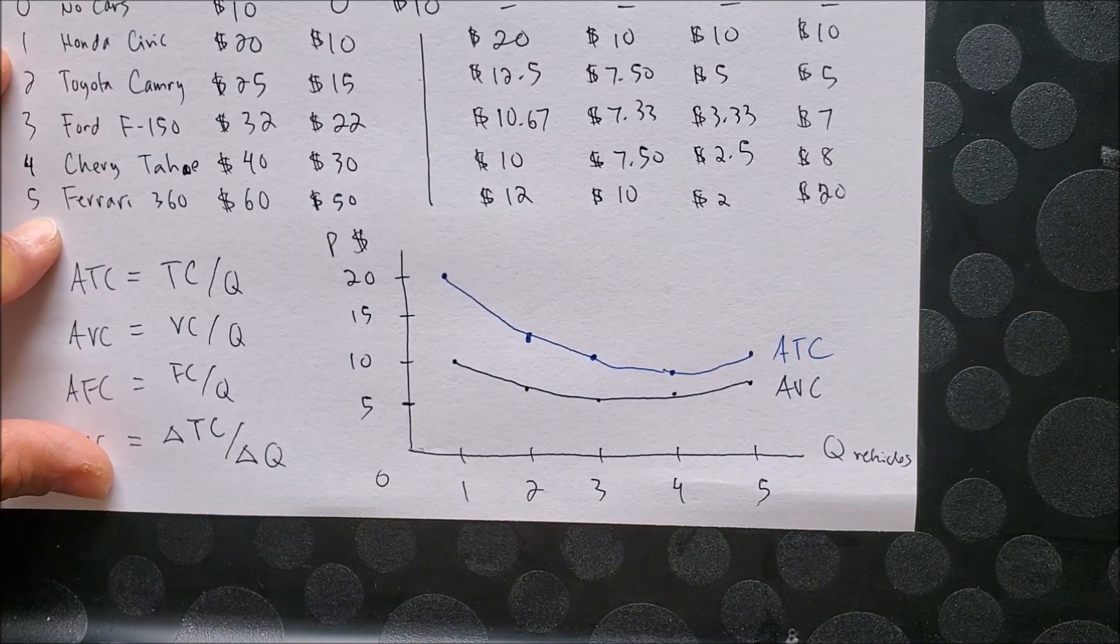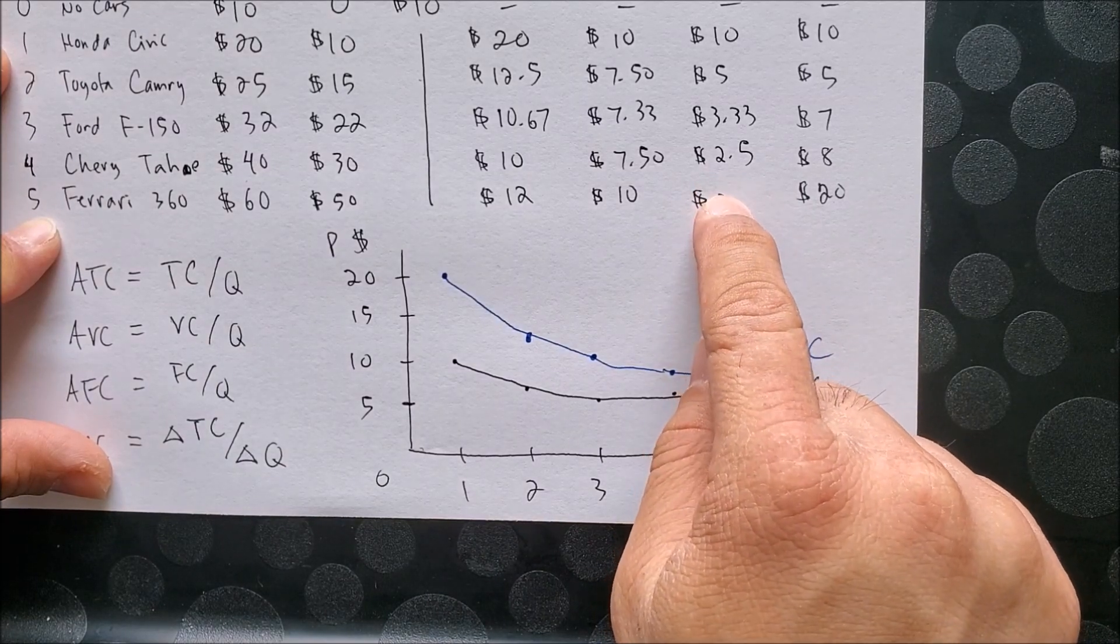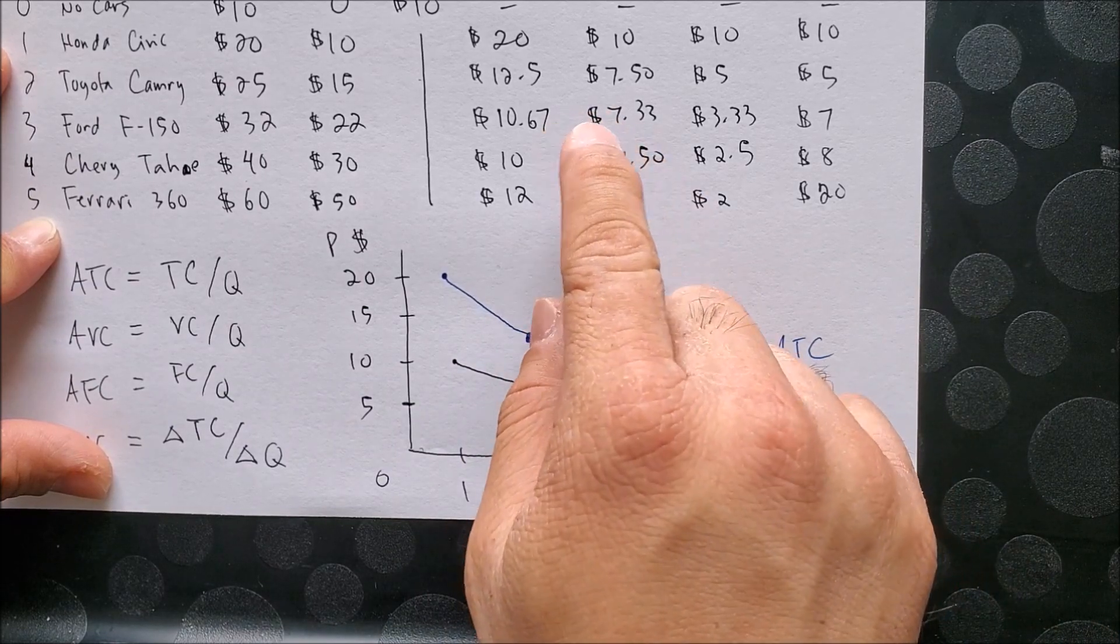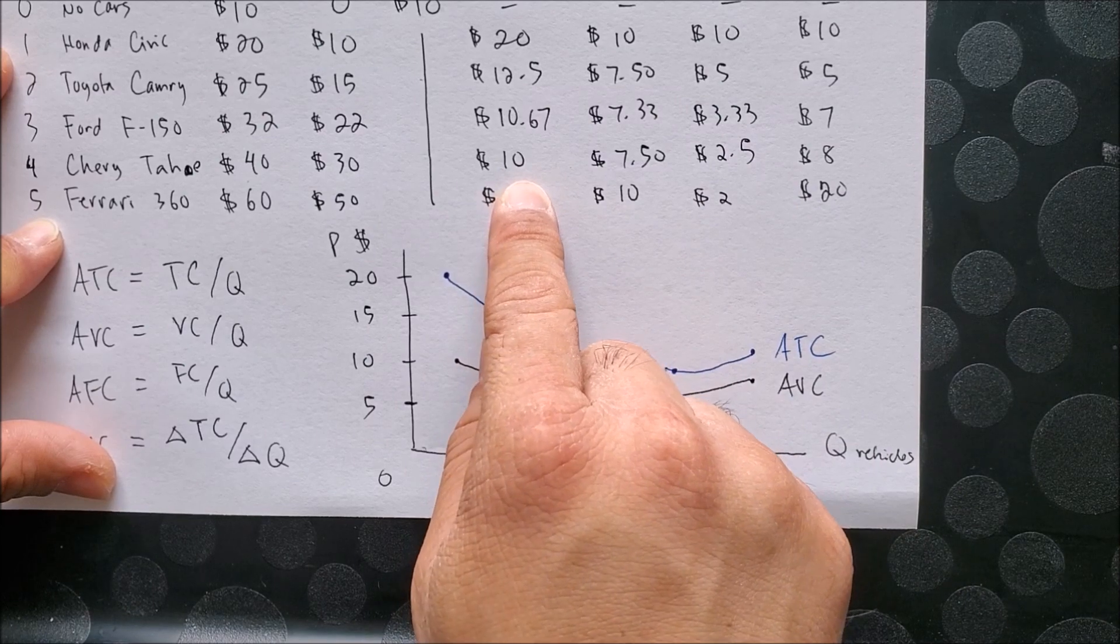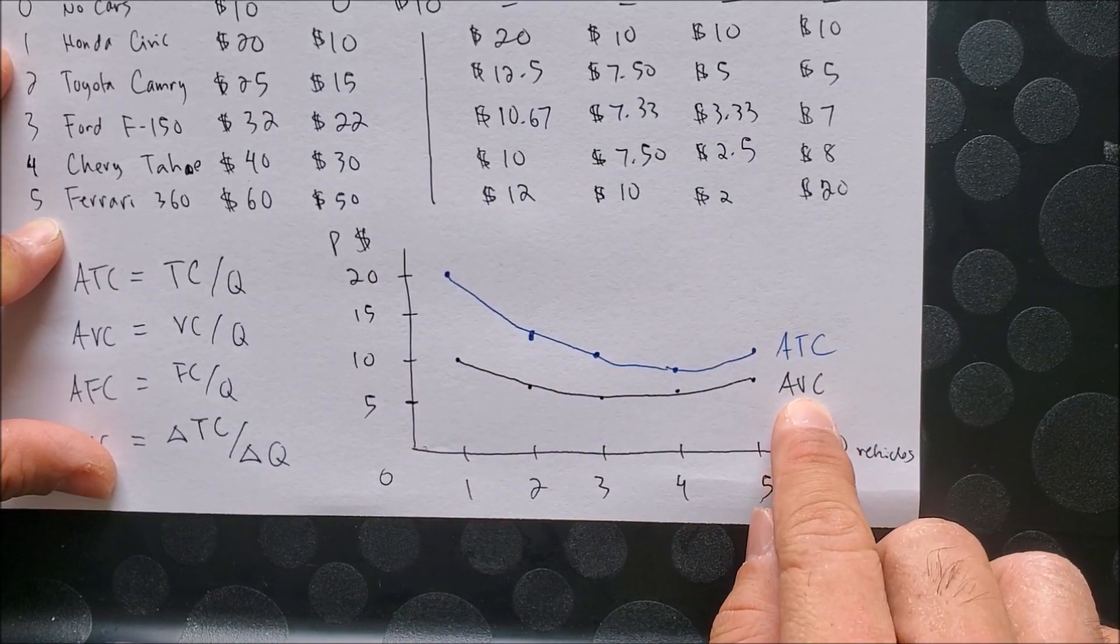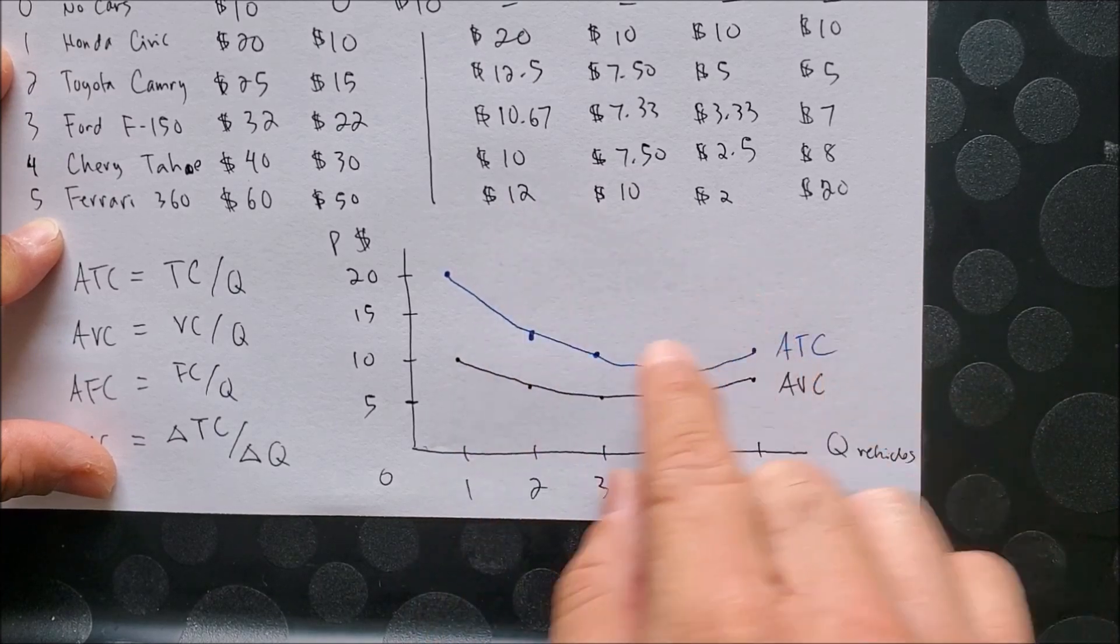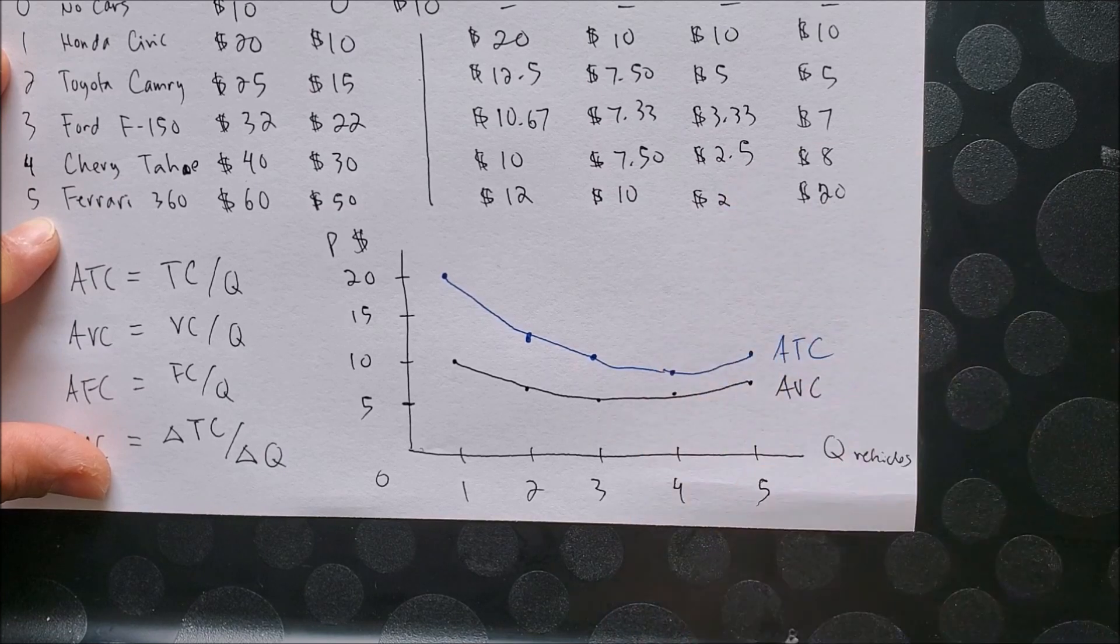Now one thing you should note though is AVC and AFC cannot be above ATC because if variable costs and fixed costs equal total costs, it would be impossible if variable costs and fixed costs is above ATC. So ATC is a function of AVC and AFC.